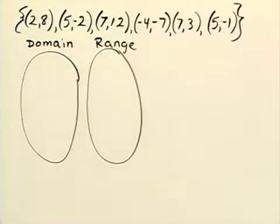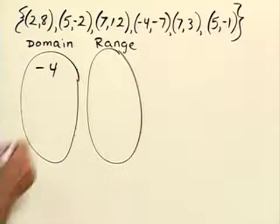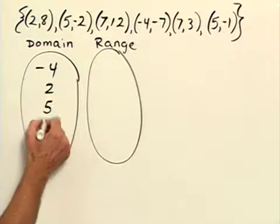Remember the domain is the set of all x-coordinates. So our domain here is negative 4, 2, 5, and 7.